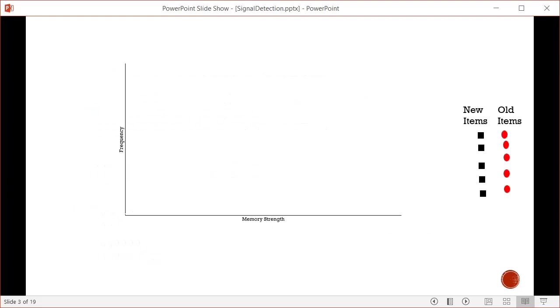On this slide, the x-axis represents memory strength, which varies from low to high. The y-axis shows the frequency of items in each memory strength category. We have to decide at what level memory strength exceeds a criterion where we'll call it old. If the item falls to the right of our criterion, we call it old. If it falls to the left of the criterion, the memory strength isn't strong enough to claim it's old, so we call it new.